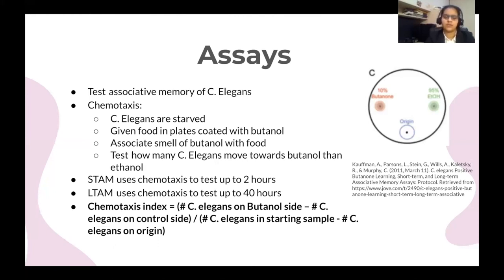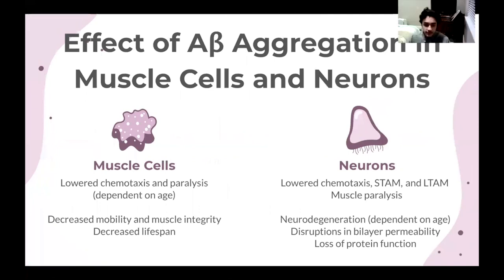We hypothesize that the N2WT C. elegans will have the greatest chemotaxis index, and strains with amyloid beta in neurons will have the lowest chemotaxis index since the amyloid beta aggregation will affect their memory. Amyloid beta aggregation in muscle cells and neurons can result in lowered chemotaxis and paralysis. When amyloid beta aggregates in muscle cells of C. elegans, decreased mobility, muscle integrity, and lifespan can occur. When amyloid beta aggregation occurs in the neurons, short-term associative memory loss and lowered long-term associative memory can occur, as well as neurodegeneration, disruptions in bilayer permeability, and a loss of protein function.